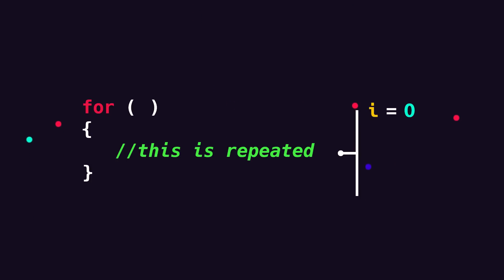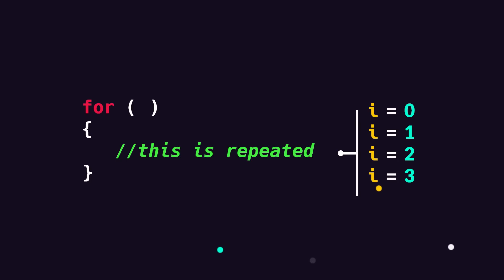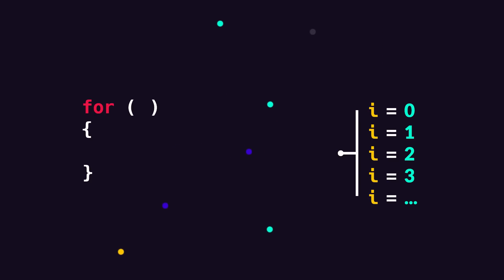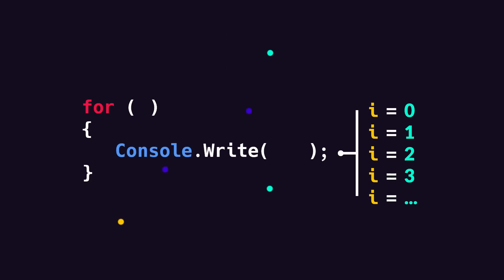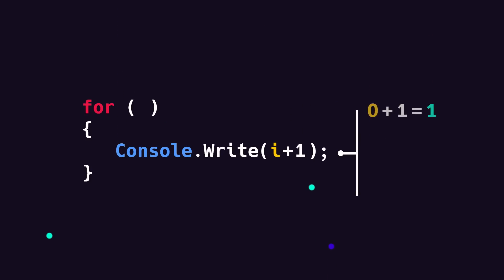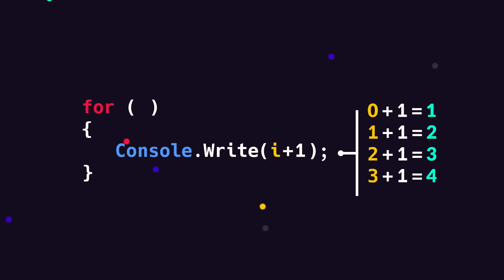We normally start i at zero. So the first time the loop runs, i is zero, then one, then two, then three, and so on. We can use this in our code. If you want to print out the numbers one through ten, we just put console.writeline inside of our for loop and have it write out i plus one. So when we run our program, i starts at zero, and so zero plus one is one. The second time it prints one plus one, which is two, and so on.